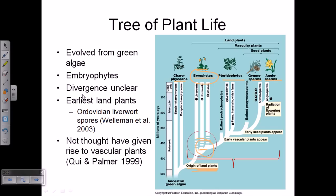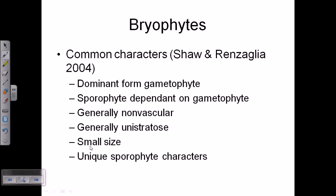Their divergence is unclear in many places because we do not have that many fossilized examples. We have some examples of liverworts and some examples of mosses, but it is still not entirely clear, and research is still ongoing. Whatever evidence we have confirms that bryophytes are among the first type of land plants.